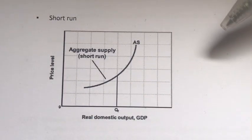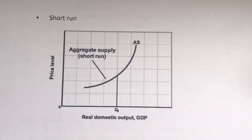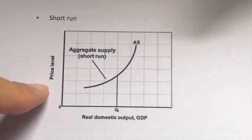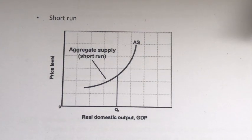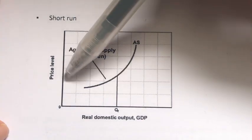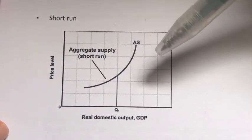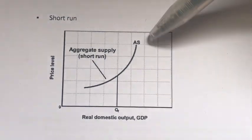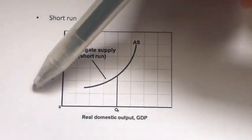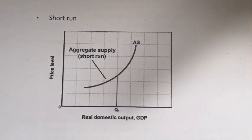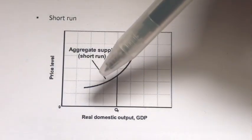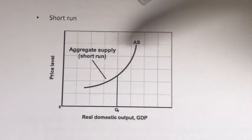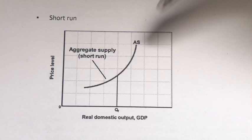Why is it upward sloping? Because since input prices are fixed, changes in the price level will raise or lower the firm's real profits. So logically, at higher price levels, firms will generate more profits, which becomes an incentive for them to produce more. Vice versa, at lower price levels, firms will be making lower profits, so they will not have much incentive to produce a lot. That is why in the short run, the aggregate supply curve is upward sloping.